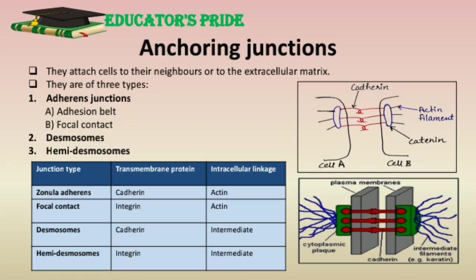The second type is anchoring junctions. They mechanically attach cells and their cytoskeleton to adjacent cells or to the extracellular matrix. It includes mainly three types: first, adherens junctions; second, desmosomes; and third, hemidesmosomes. Adherens junctions connect bundles of actin filaments from cell to cell or from cell to extracellular matrix, and are of two types: adhesion belt and focal contact. Different types of anchoring junctions with their related transmembrane proteins and filaments are listed in the table. The adhesion belt, or zonula adherens, is a cell-to-cell junction mediated by actin filaments and proteins belonging to the cadherin family, usually located near the apical surface just below the tight junctions. The focal contact, or adhesion plaque, is a cell-matrix junction mediated by transmembrane adhesion proteins of the integrin family and actin filaments.